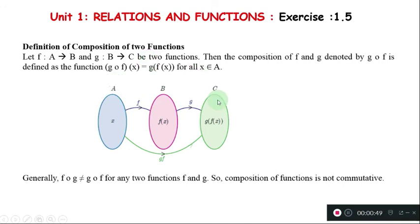When you're using a function, g of f is the second function in the first function. So let f such that it goes to B and g such that B goes to C be two functions. Then the composition of f and g denoted by g of f is defined as the function g of f of x. In the first function, x is in A. Then g of f of x, we can see x is in A. If you see x at first, you can see x is this. In x, we can see x is this.